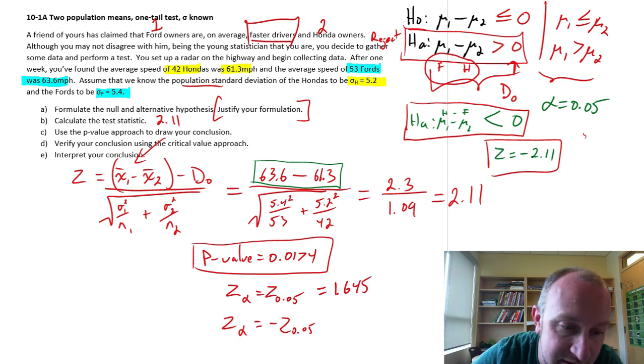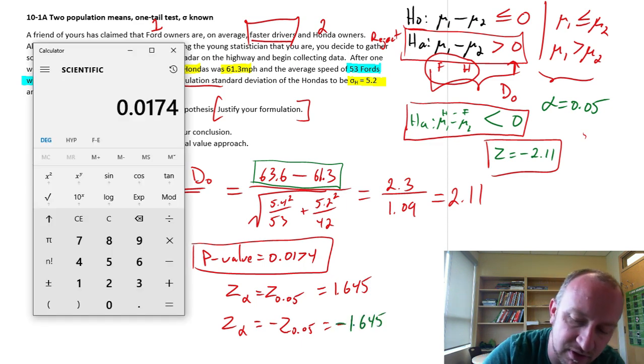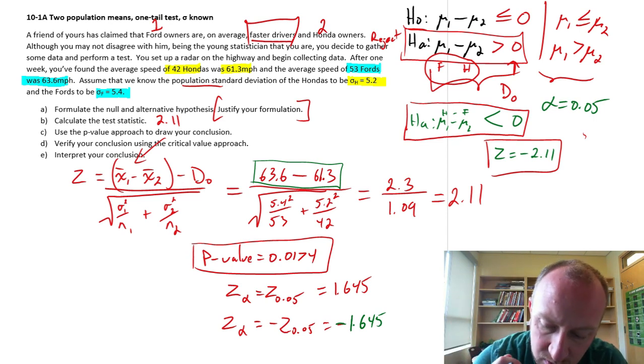And again, that's going to be the same absolute value for either one. So this is going to be 1.645 for an upper-tailed test. If we were doing this as a lower-tailed test, we would have this as negative 1.645. And again, we would have gotten exactly the same conclusion. So this all works.